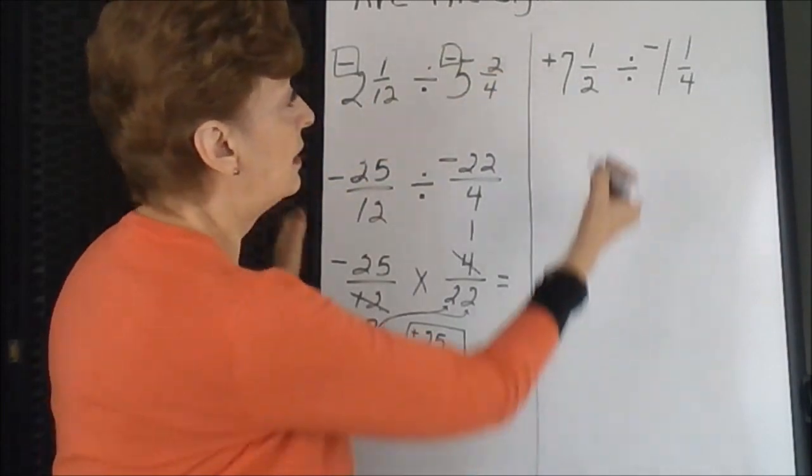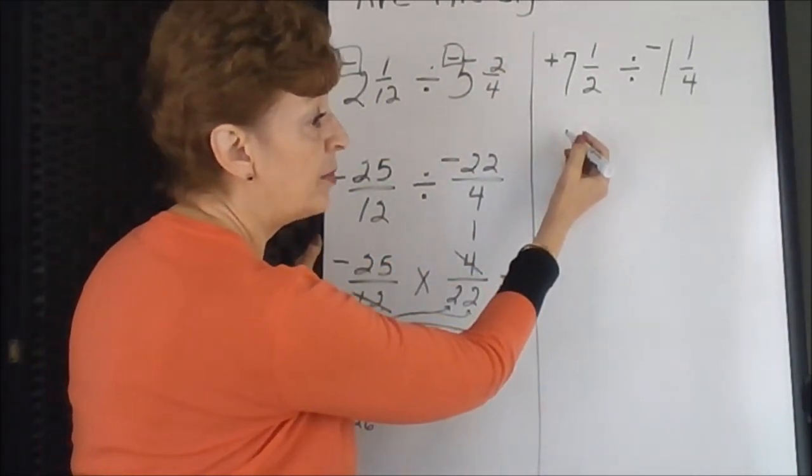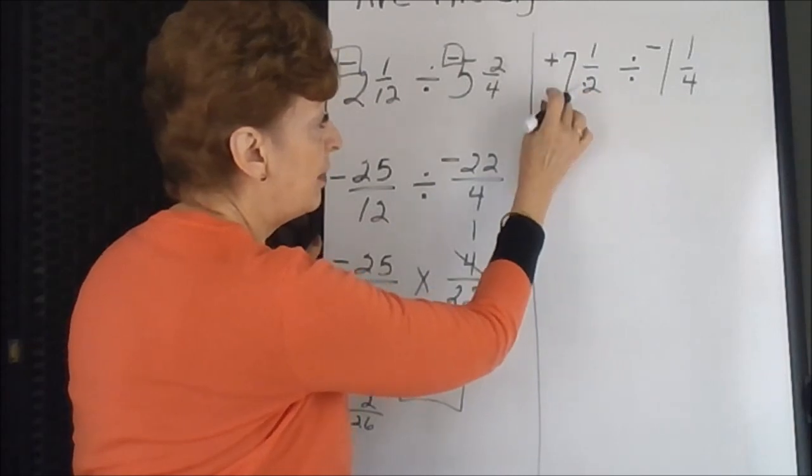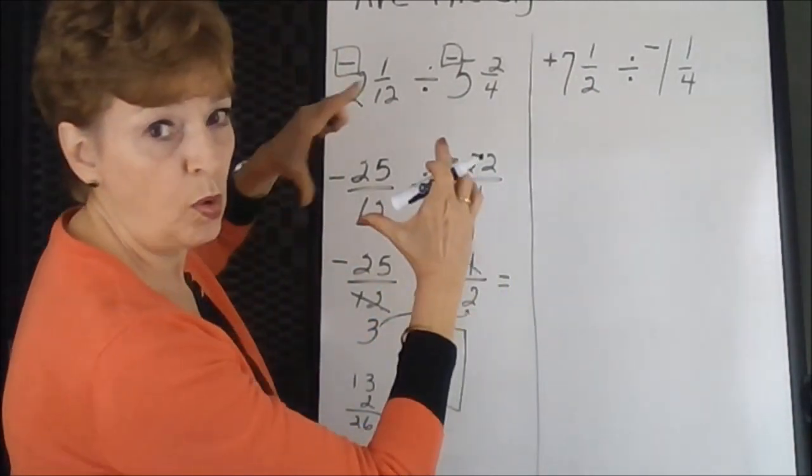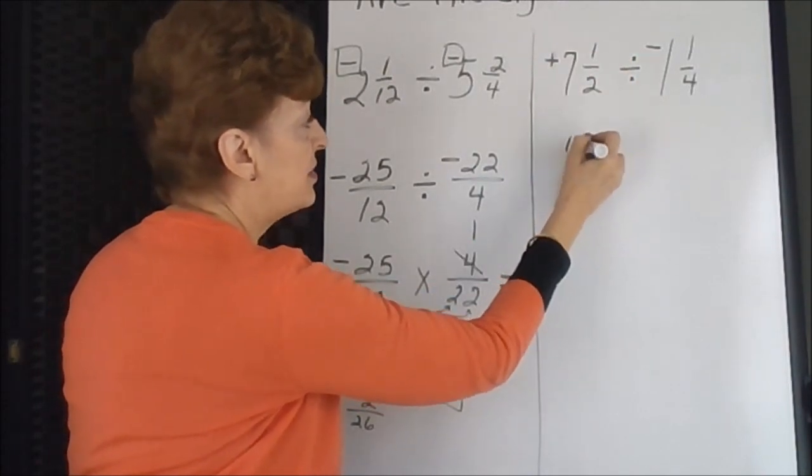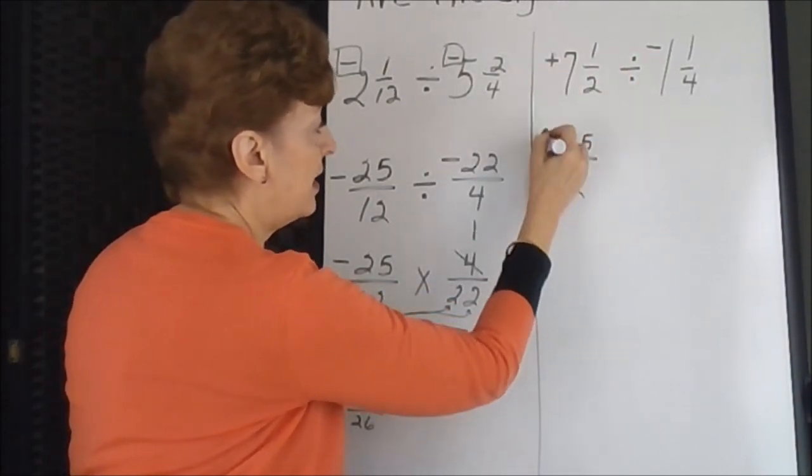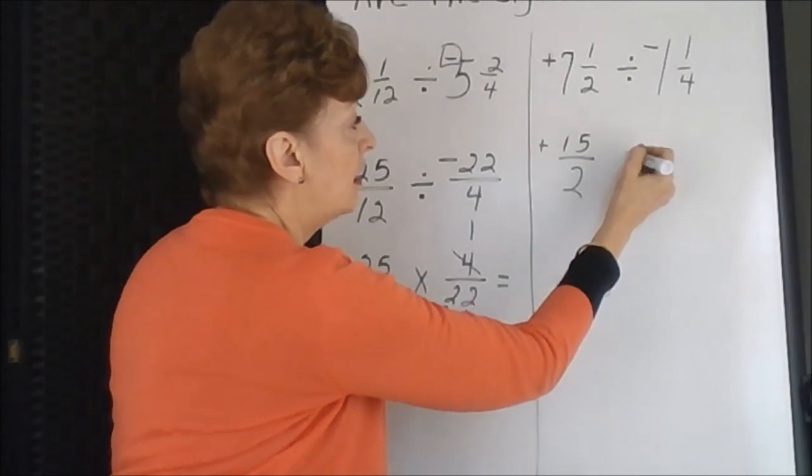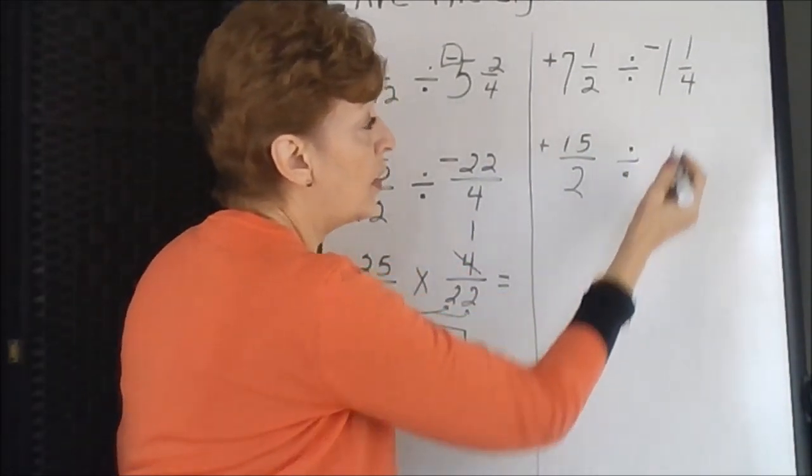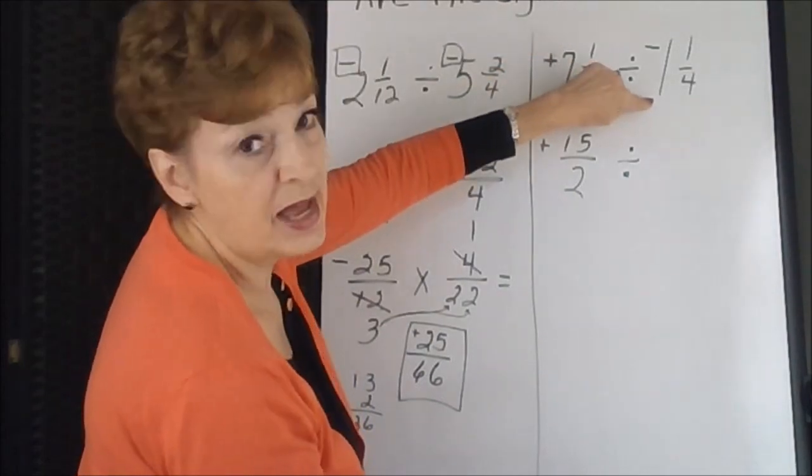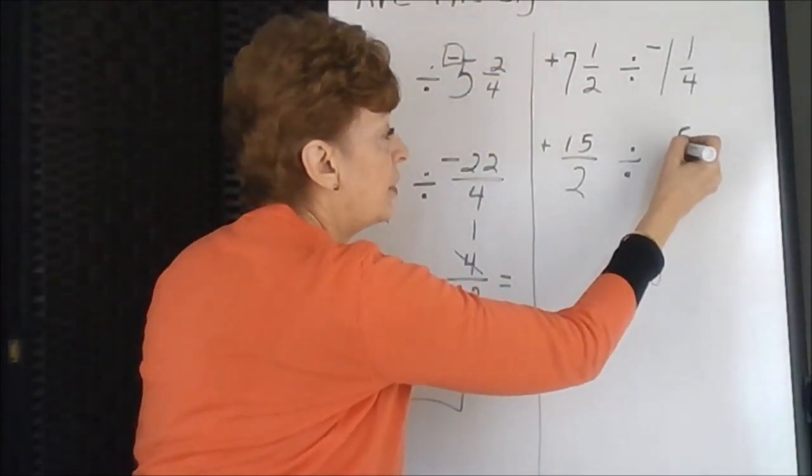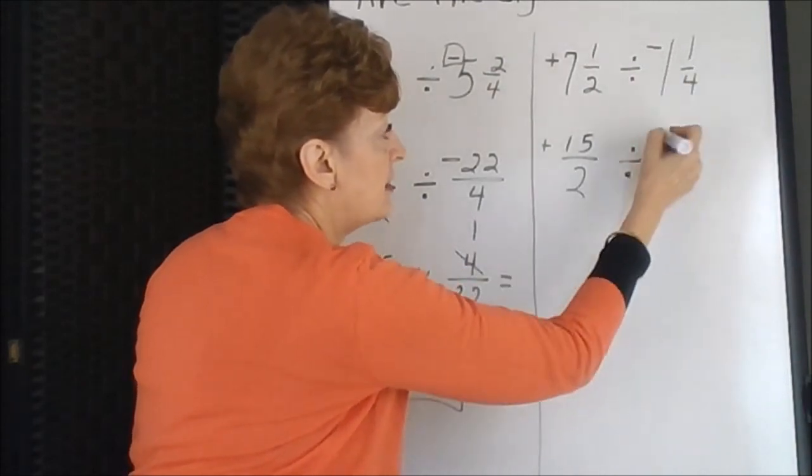Next, we're going to have to get improper fractions. 2 times 7 is 14. We can get 14 halves out of 7 whole pots. 14 and 1 we had is 15 halves. Take the sign with it. 4 times 1 is 4. We can get 4 fourths out of 1 whole, plus we already had one, so that's 5 fourths. Take the sign with it.